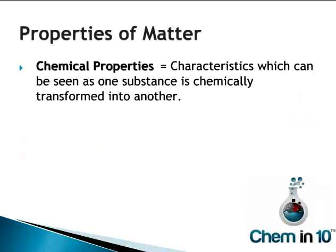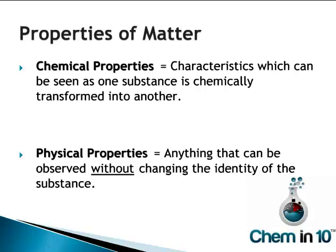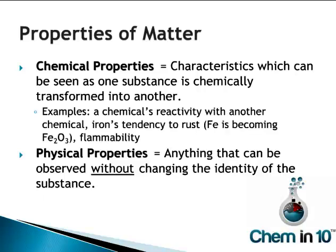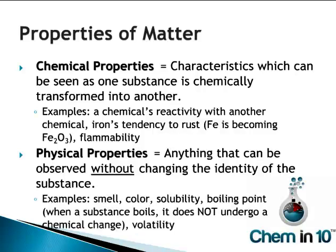Matter has both chemical properties and physical properties. Chemical properties are characteristics which can be seen as one substance is chemically transformed into another. For example, a chemical's reactivity with another chemical, iron's tendency to rust to become iron(III) oxide, and flammability — a substance's reaction with oxygen. These are all chemical properties. Physical properties, on the other hand, are properties that can be observed without changing the identity of the substance — for example, smell, color, solubility, boiling point, and volatility.